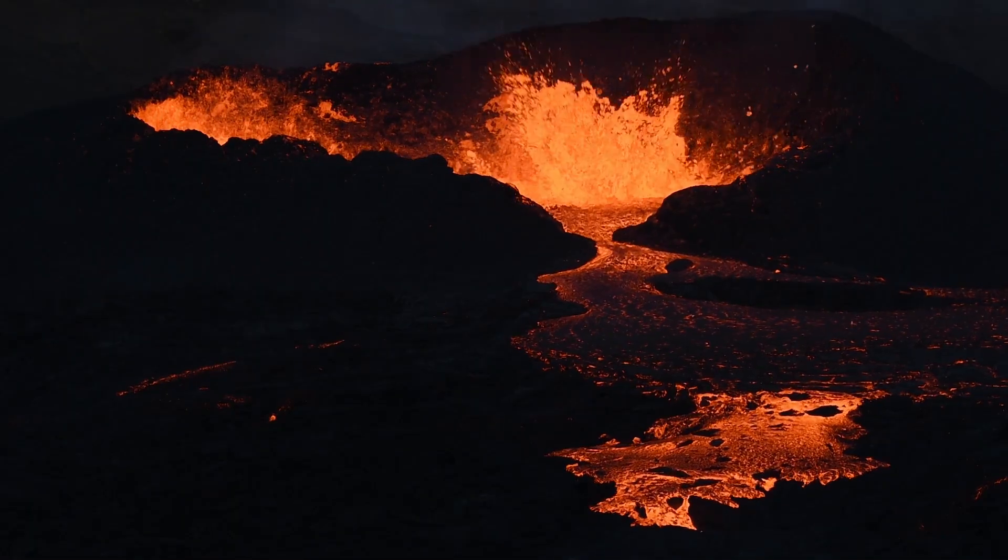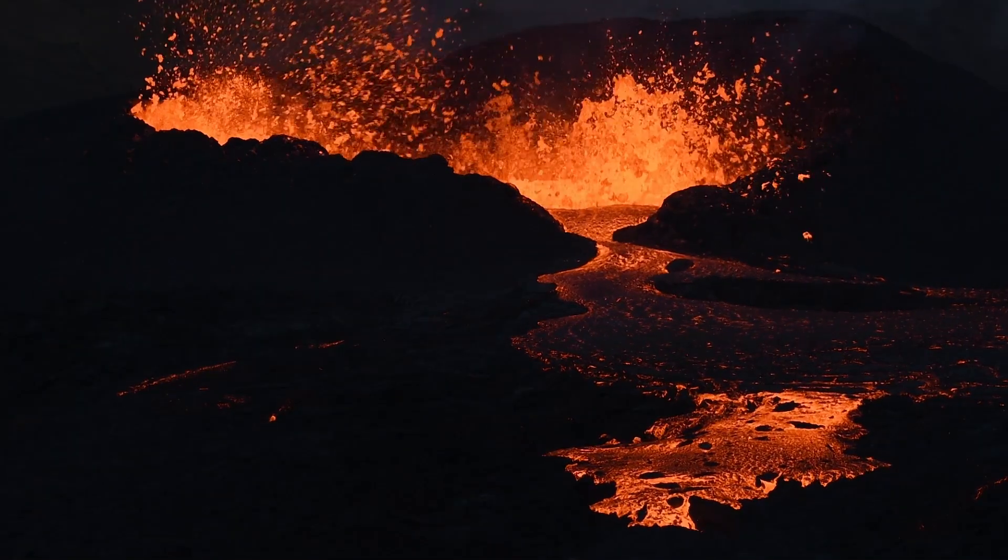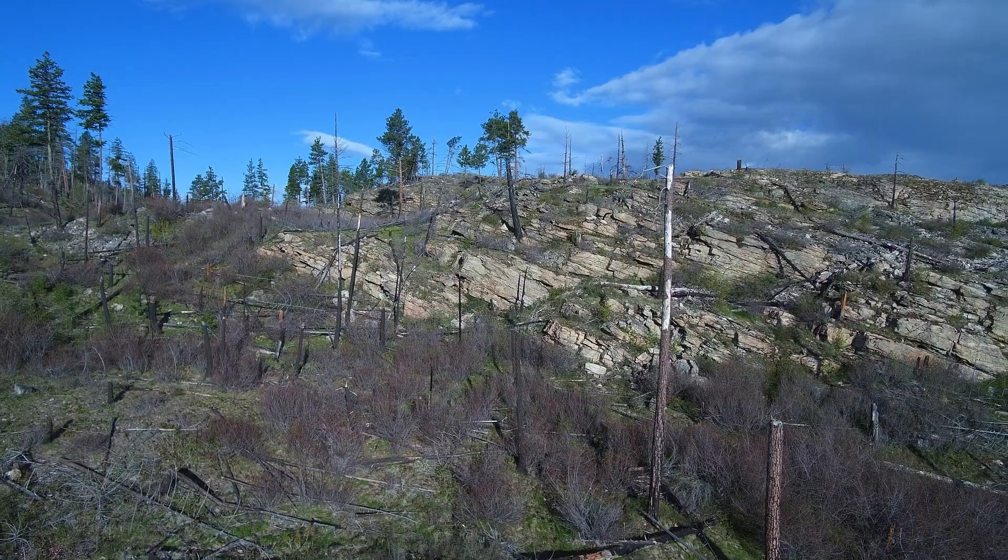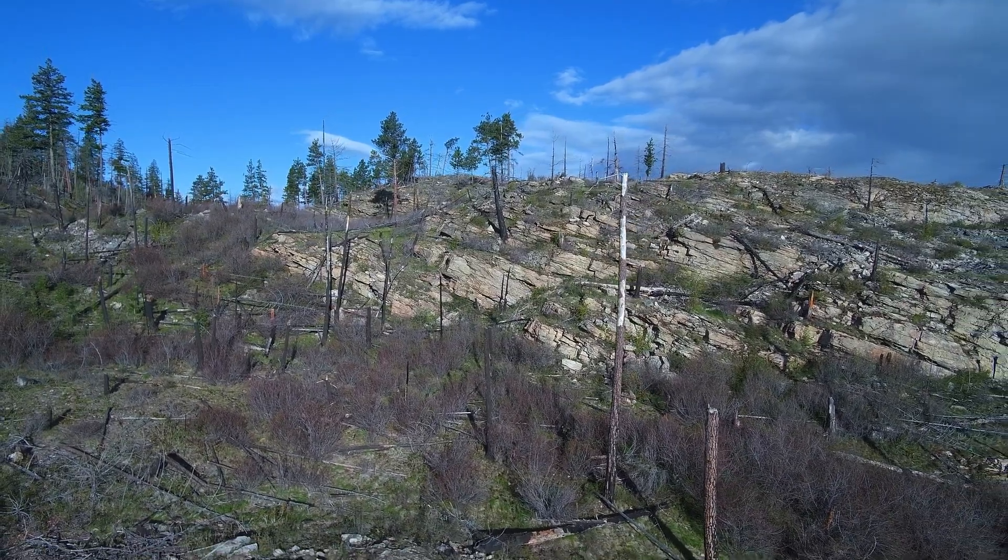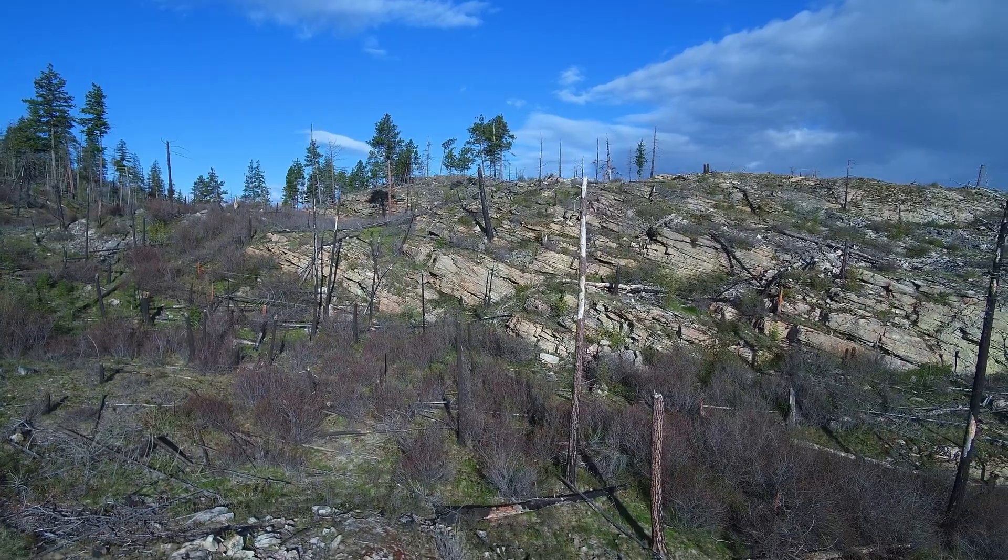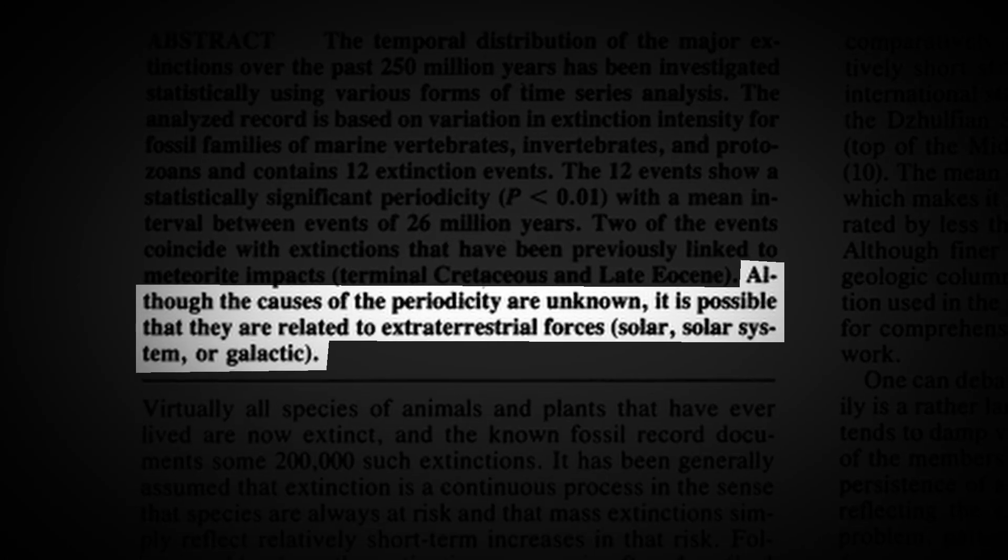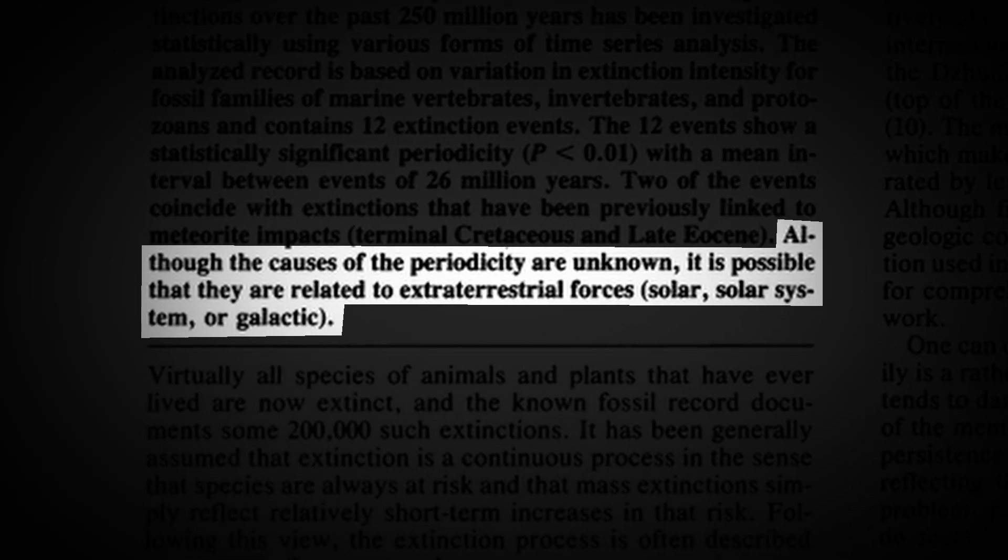Extinctions happen for many reasons, but it's hard to think of an earthly means in which an extinction event could occur on such a consistent cycle. Massive volcanoes? They can be consistent, but they don't last super long, and there's usually evidence. Diseases are out of the question, and habitat collapse caused a lot of extinctions, but what habitat collapses every 28 million years?